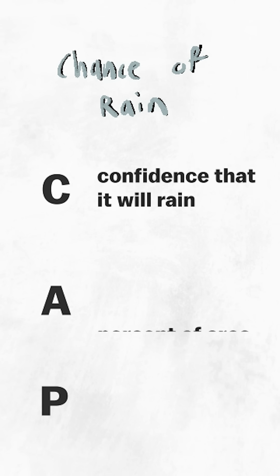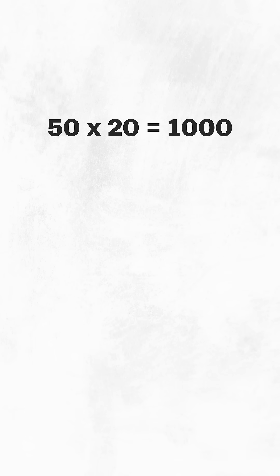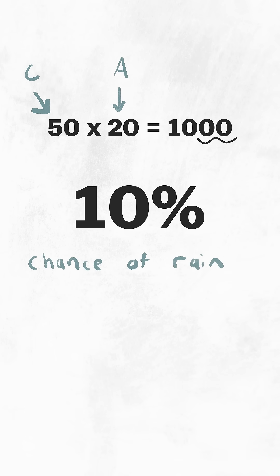C being the confidence that rain will fall somewhere, A being the percent of the city or county that will experience rain, and P being the resulting probability of precipitation. To calculate, you multiply C times A and then move the decimal point two places to the left.